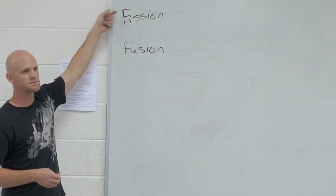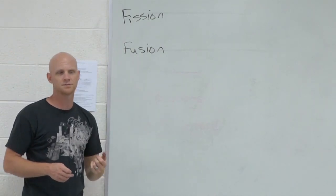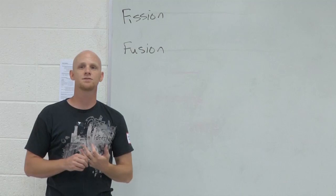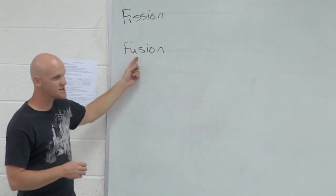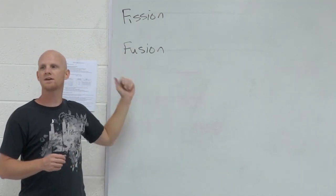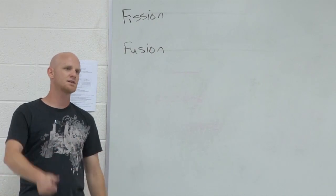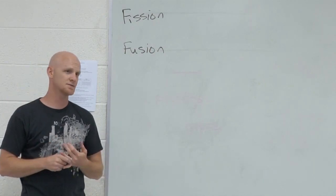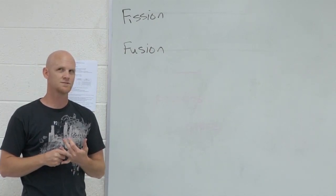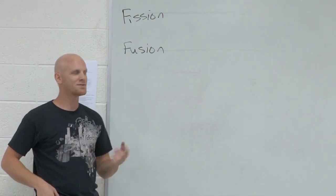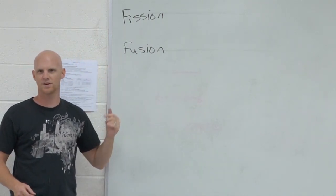Fission, we can do at room temperature. We do these in our nuclear reactors, your nuclear bombs. Fusion, on the other hand, fusion is only possible if the temperature is high enough, i.e. millions of degrees. Guess which one we don't do in our reactors? This guy. Because millions of degrees.